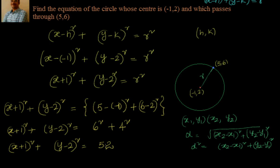So you can leave it here, or you can also simplify it and write it as x square plus y square plus 2x minus 4y. We have 1 and 4, giving 5 here. So we will bring 52 to the left side, giving minus 52, and that will be minus 47 equal to 0. Expanding: x square plus 2x plus 1 plus y square minus 4y plus 4 equal to 52. So x square plus y square plus 2x minus 4y plus 5 minus 52, that is x square plus y square plus 2x minus 4y minus 47 equal to 0.